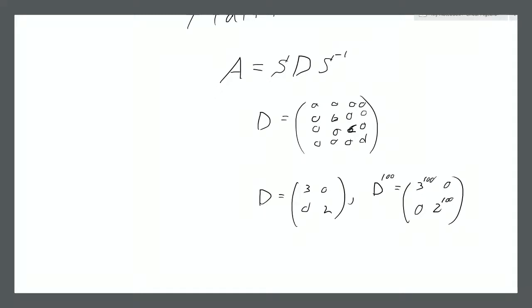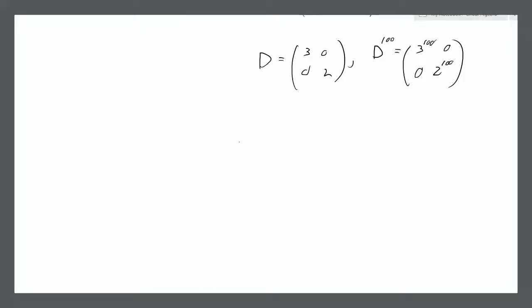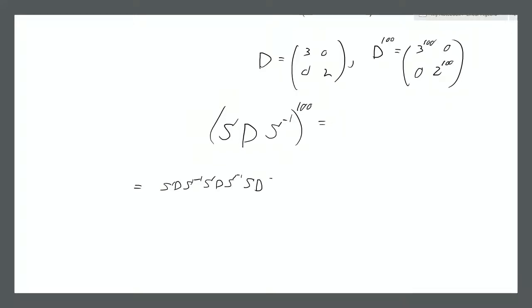And if we have a diagonal matrix surrounded by another matrix and its inverse — so S D S inverse — and we bring that to the power of 100, what is that going to be? Well, we're going to have S D S inverse multiplied by S D S inverse, and so on, 100 times in total.